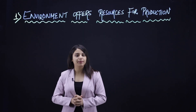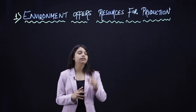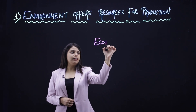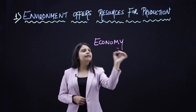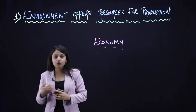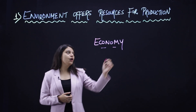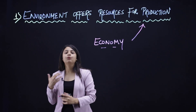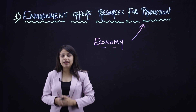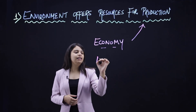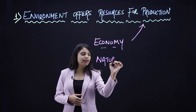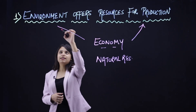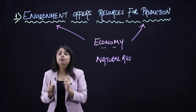The first point of the significance of environment is: environment offers resources for production. When we talk about a growing economy, production increases. And this production happens when you take the natural resources available to you and make useful things from them. And all these natural resources come from the environment, which is why environment is very important.